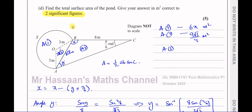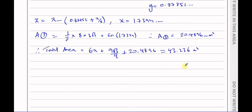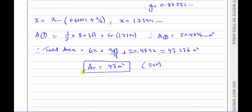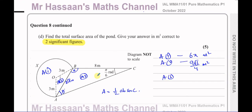They want the answer to two significant figures, so the total area is 43 metres squared to 2SF. That's the answer for part D of question 8, which concludes the whole of question 8 from this P1 October 2022 exam.